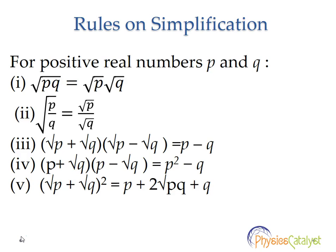Third rule, which is the most important rule, is root P plus root Q multiplied by root P minus root Q is equal to P minus Q. Rule number 4: P plus root Q multiplied by P minus root Q is equal to P square minus Q.